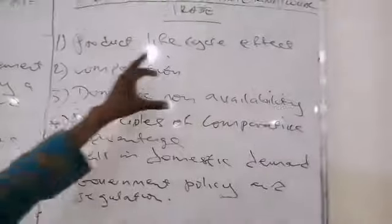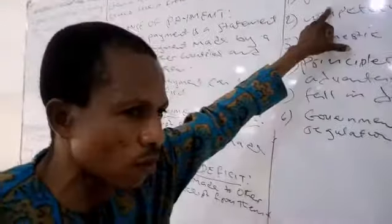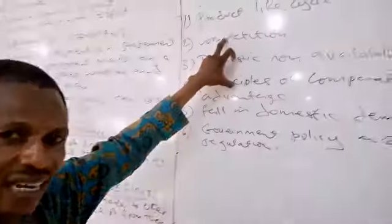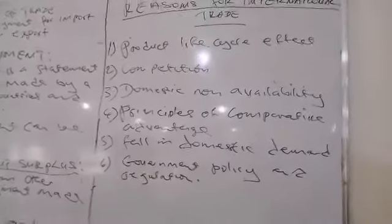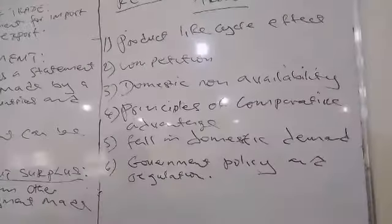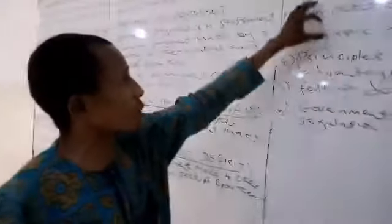Let's look at the reasons for international trade. Number one, product life cycle effect. There are some commodities or products you produce and use locally or domestically. When the life cycle has expired — that is, your country is no longer needing those products — they may still be useful in other countries. For example, most of the Tokunbo cars we use here in Nigeria are no longer useful abroad. That is what we mean by product life cycle.